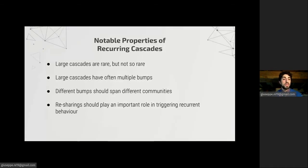So we can summarize some notable properties for recurring cascades. First, large cascades are rare but not so rare. Large cascades have often multiple bumps. This was observed in 50% of large cascades analyzed by Cheng et al. Different bumps should span different communities. And finally, resharing should play an important role in triggering the recurring behavior.